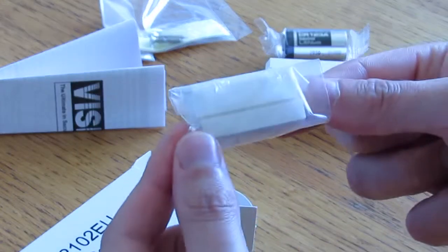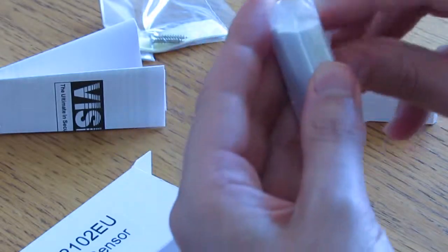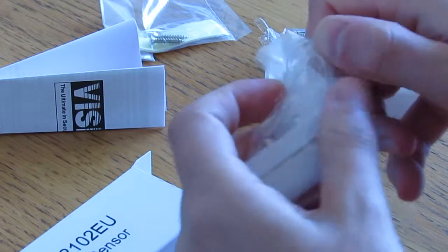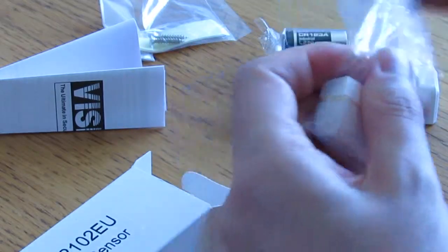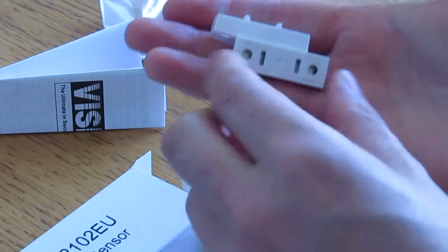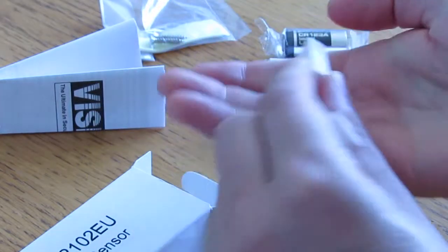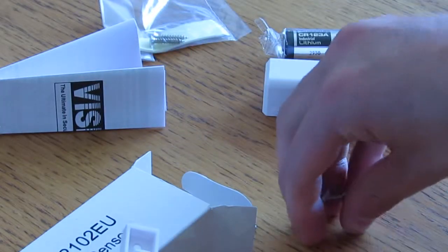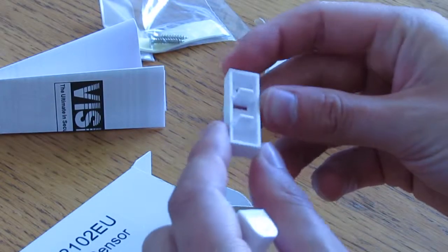And finally we've got the, it looks like the magnet. Let's just open this up. Yep, so here's the magnet, and again you get another sticky pad with that to attach it to the door or window and some more screws inside as well, depending on your preference of attachment.